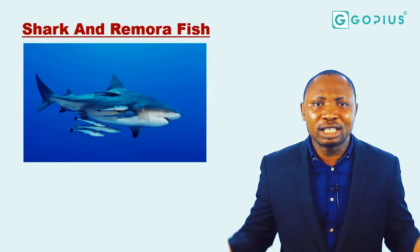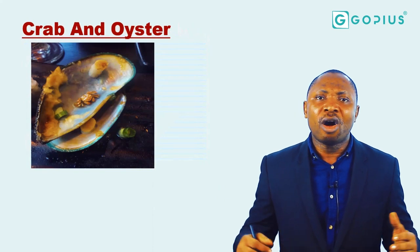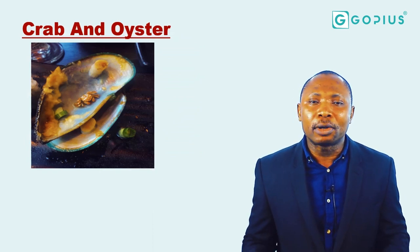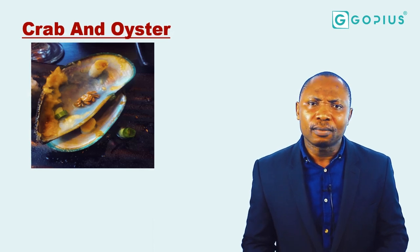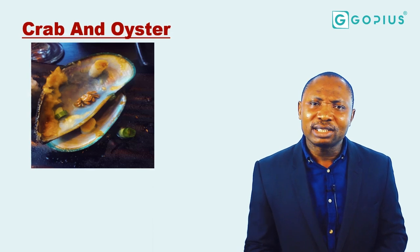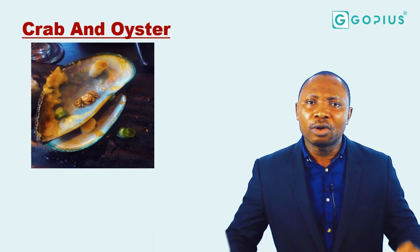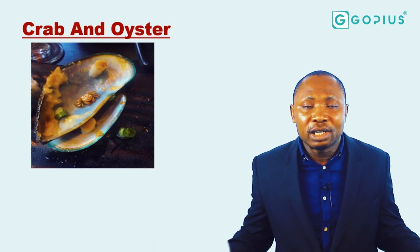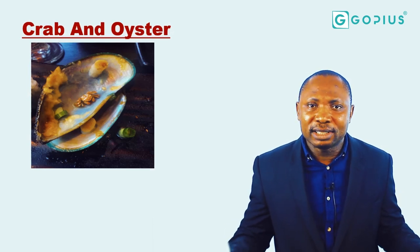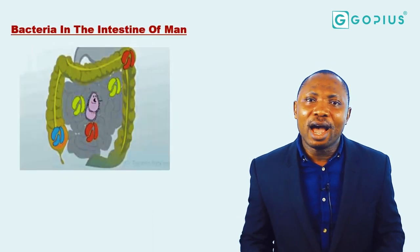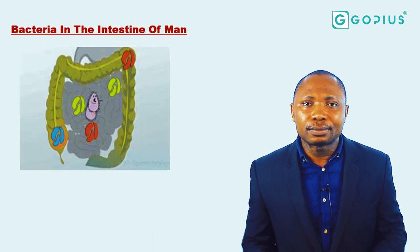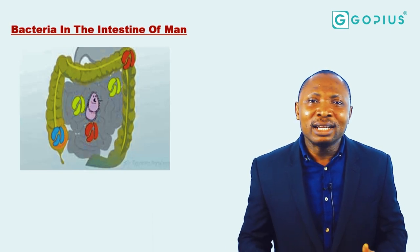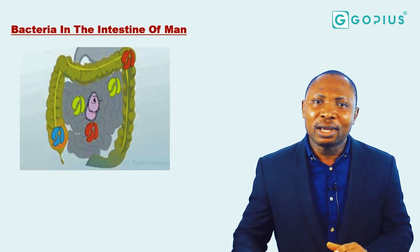That's basically what commensalism is. Another example is the oyster and the crab. The crab gains access into the oyster in a water body, and because of the tough shell of the oyster the crab is protected and secured. The oyster is not gaining anything from the crab but is not affected by its presence. Another example is bacteria in the intestine of man — the bacteria gets protection and food from man, while man is not affected by this bacteria.